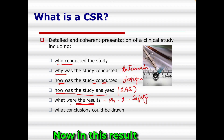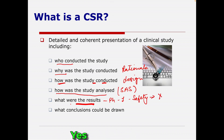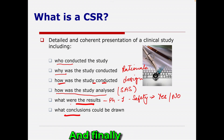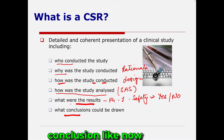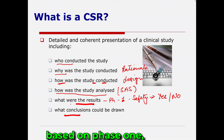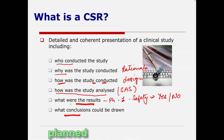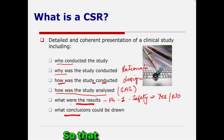For example, if it is a phase one study, safety is your goal. The results should tell you whether it is safe or not. That is part of the clinical study report. And finally, the conclusion — for a phase one study, they may state that the test drug is safe, or that additional studies are required to be more conclusive.